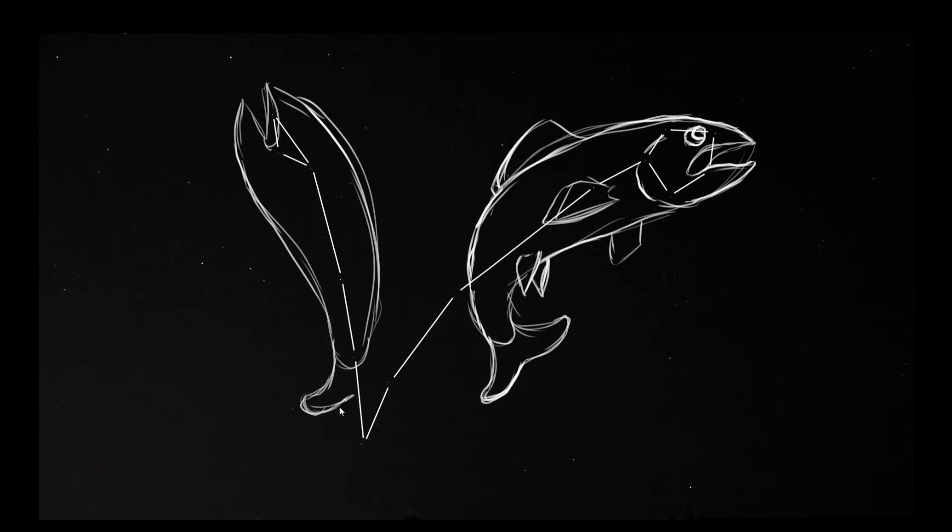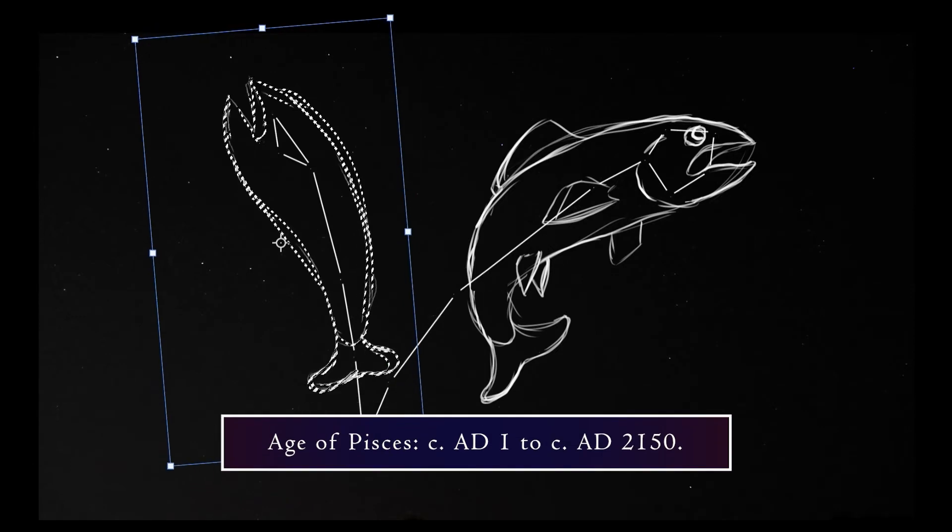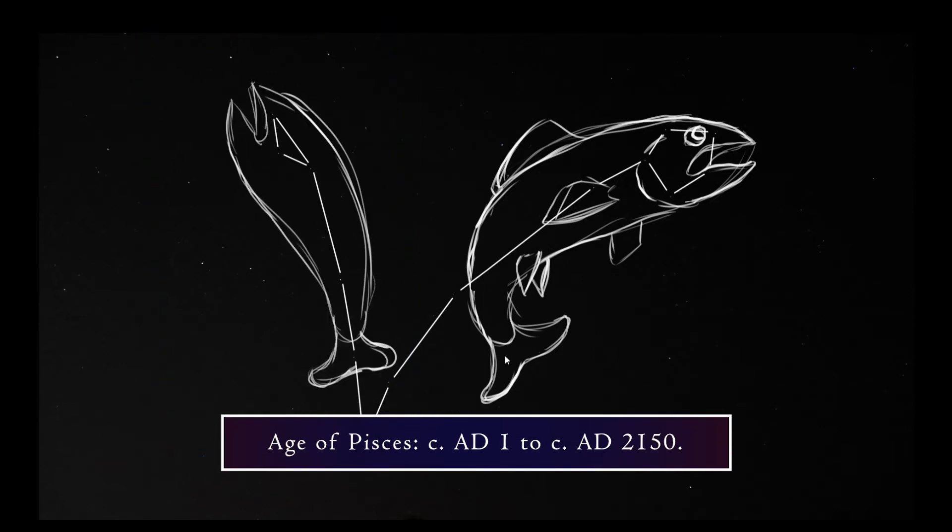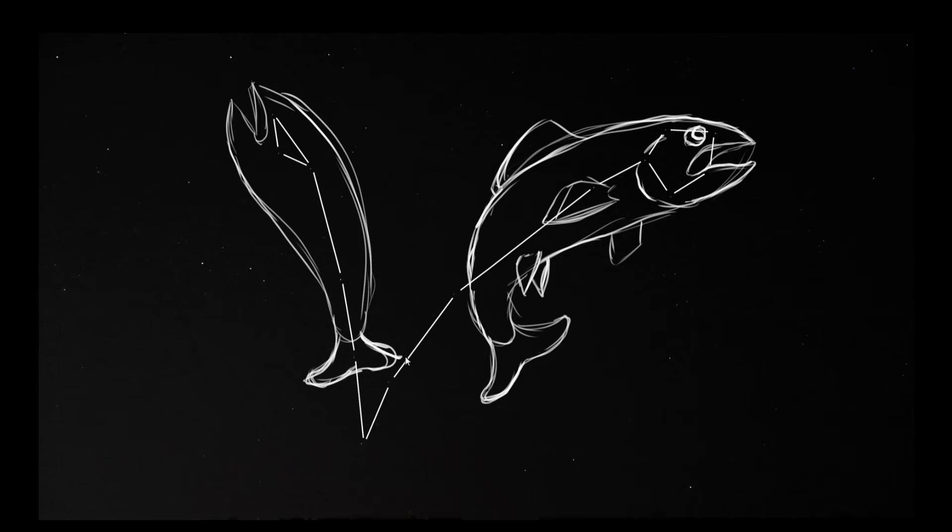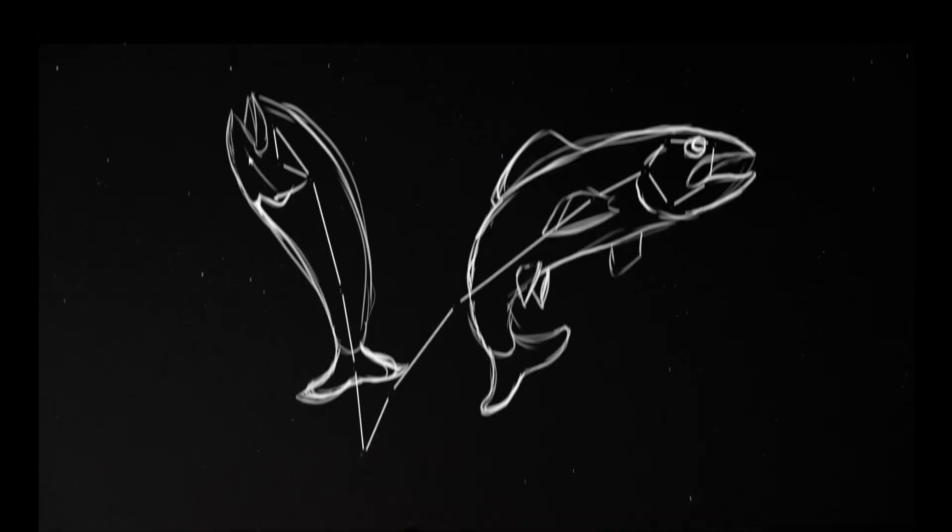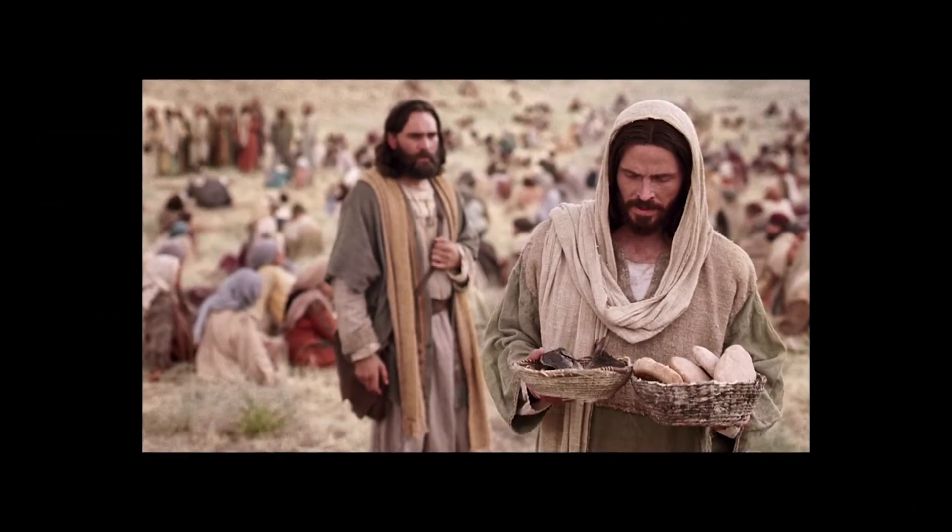Pisces is also a symbol representing Jesus Christ. The birth of Christ coincides with the beginning of the Age of Pisces, which we are currently in. Astrological ages are determined by the position of the sun during the spring equinox. This gradually changes as the Earth's axis rotates very slowly year after year, but it currently takes place in Pisces. The two fish in Pisces are also reminiscent of the miracle told in the New Testament where Christ feeds the five thousand people with just two fish and five loaves.